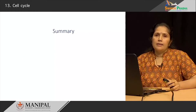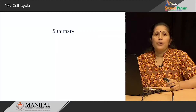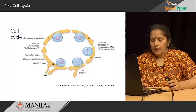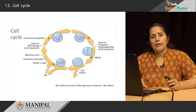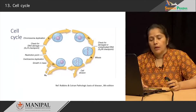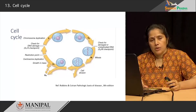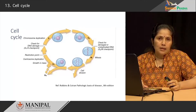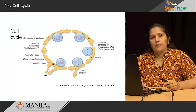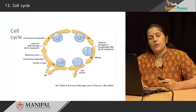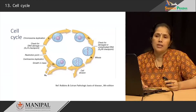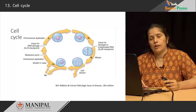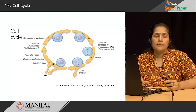Understanding the cell cycle helps us understand why cancers develop. To summarize: we looked at the different phases of the cell cycle. There are two kinds of cells which can enter the cell cycle — G0 quiescent cells, which are not actively replicating but can be stimulated to enter the cycle, and cells which are constantly undergoing mitotic division and will re-enter the G1 phase.